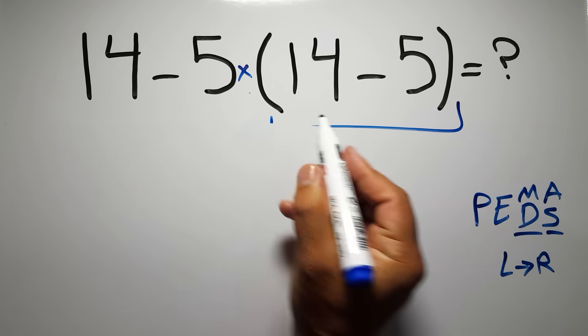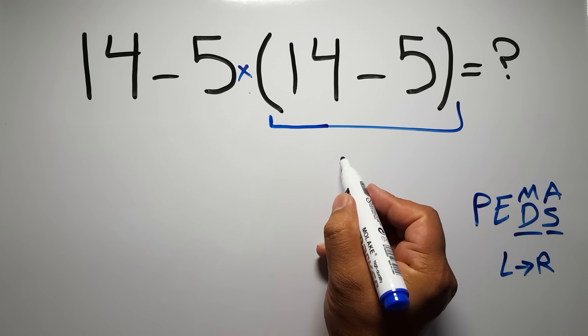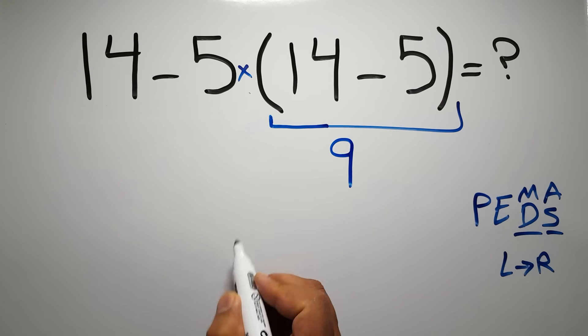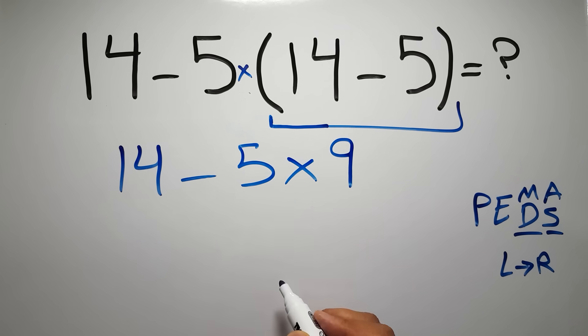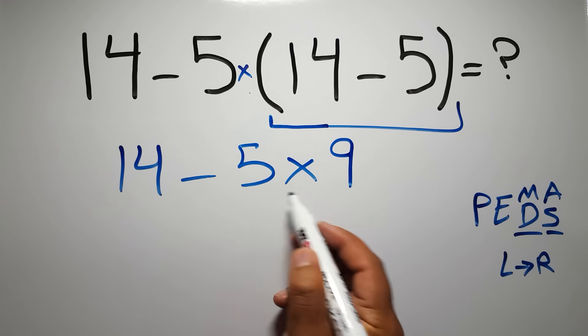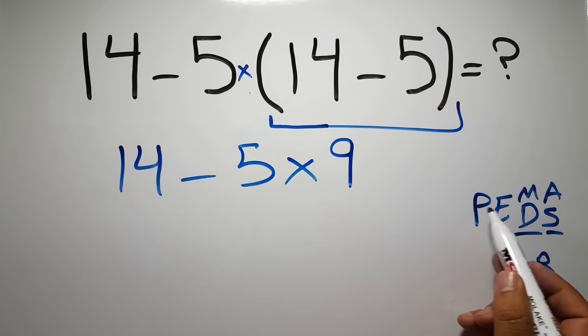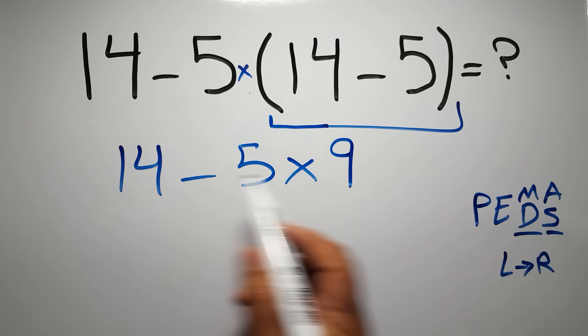So first, this parentheses. Inside these parentheses we have 14 minus 5, which equals 9. So we have 14 minus 5 times 9. In this expression we have one subtraction and one multiplication. According to PEMDAS, multiplication comes before subtraction.